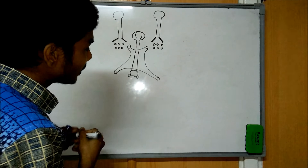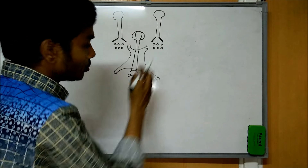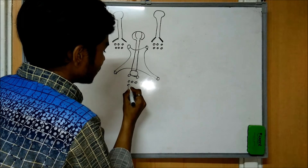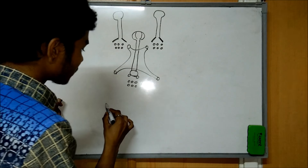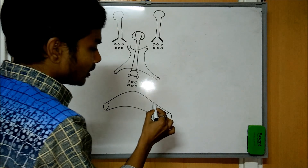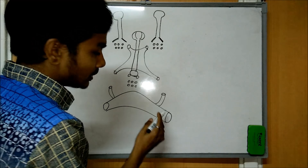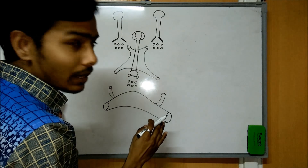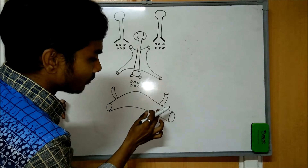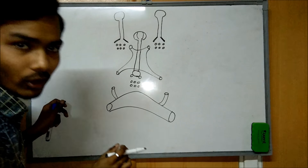After that, we have the posterior perforated substance or spaces. After that, we have the pons. From the pons, there arises the cerebral peduncle, and in the pons we have the middle cerebral peduncle.